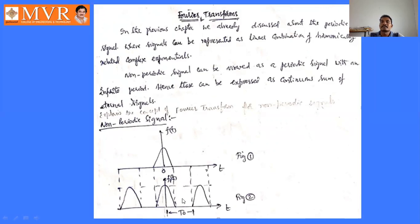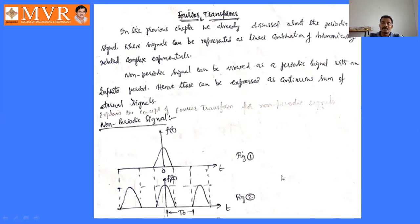Consider two diagrams: f(t) — a non-periodic signal with infinite time period — and fp(t) — a periodic signal with finite time period. For fp(t), it starts and ends at fixed points with a fundamental time period, and it repeats to infinity satisfying fp(t) = fp(t+T). However, f(t) does not satisfy f(t) = f(t+T), meaning its time period is infinite, so it is called a non-periodic or aperiodic signal.